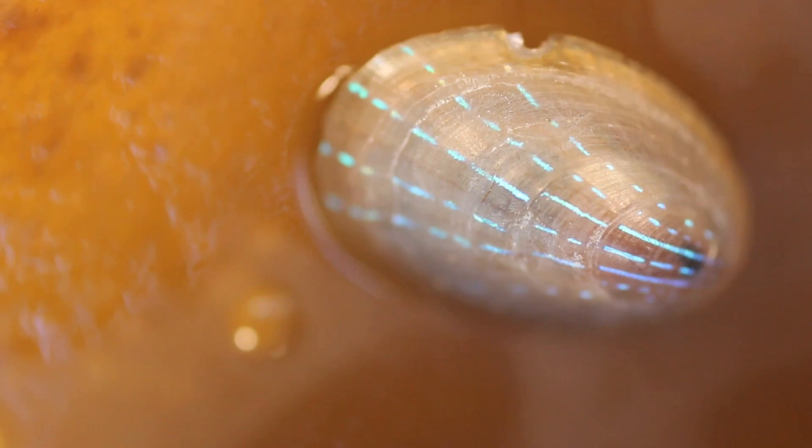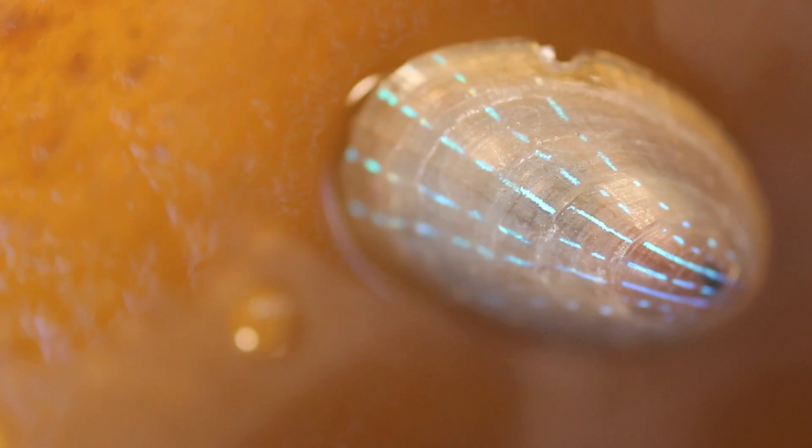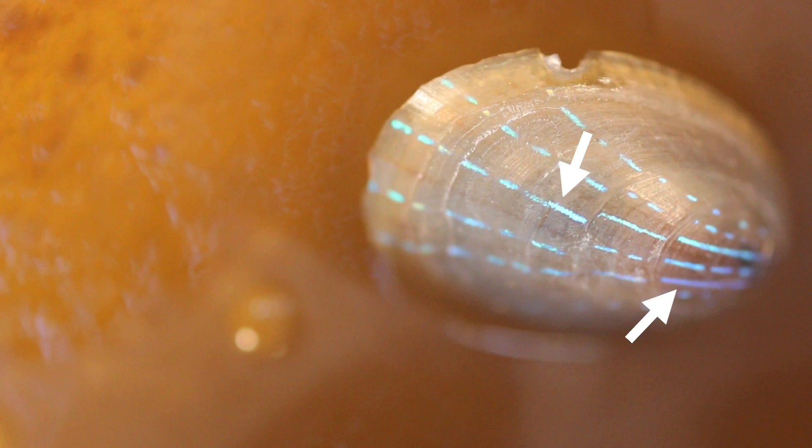These organisms may be small, their size is comparable to that of a human fingernail, but they have a unique and noticeable feature: bright blue dotted lines that run in parallel along the length of their translucent shells.